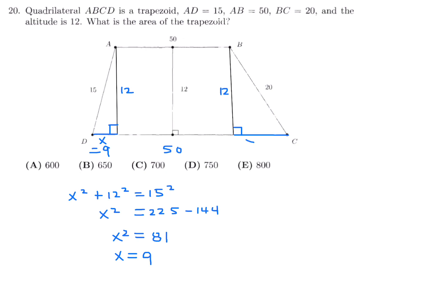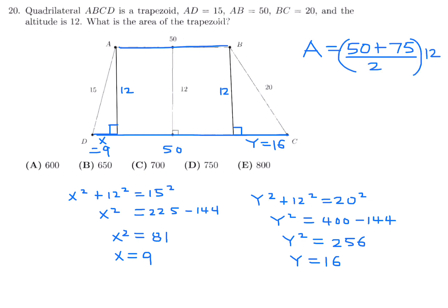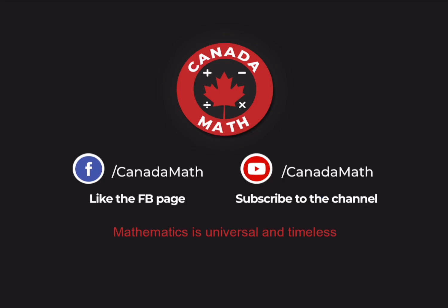For side BC: y² + 12² = 20², so y² = 400 − 144 = 256, giving y = 16. The two parallel sides are 50 and 50+9+16=75. Area = ½ × (50 + 75) × 12 = ½ × 125 × 12 = 750. Number 20, answer D.